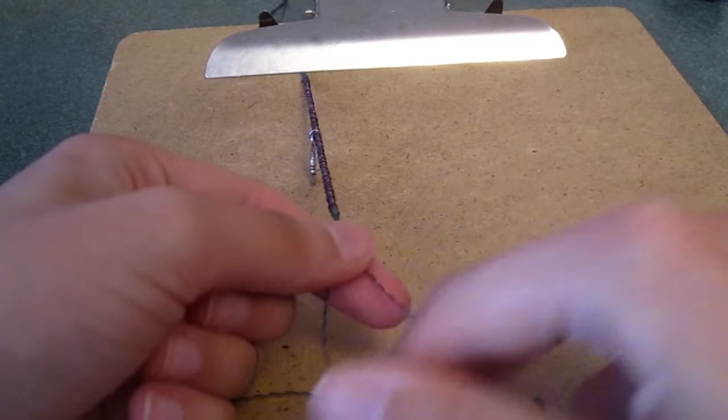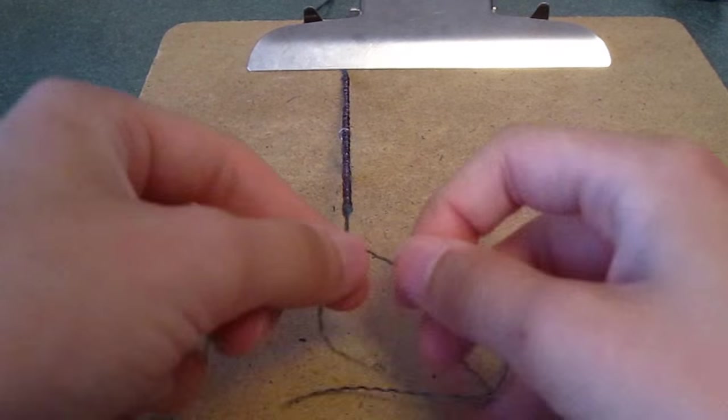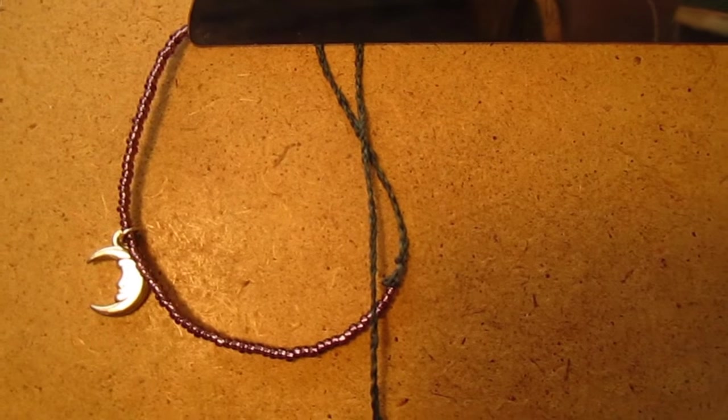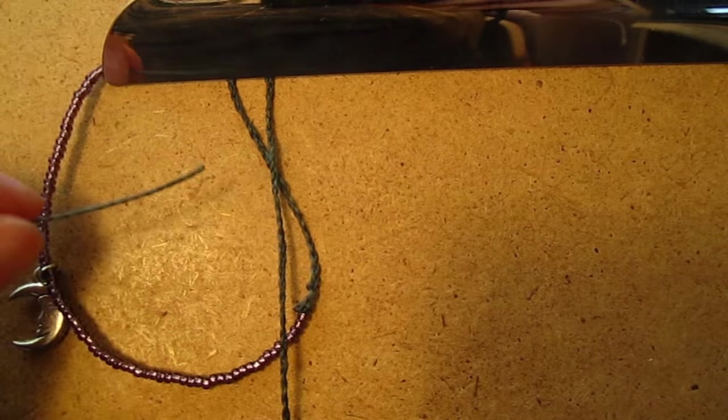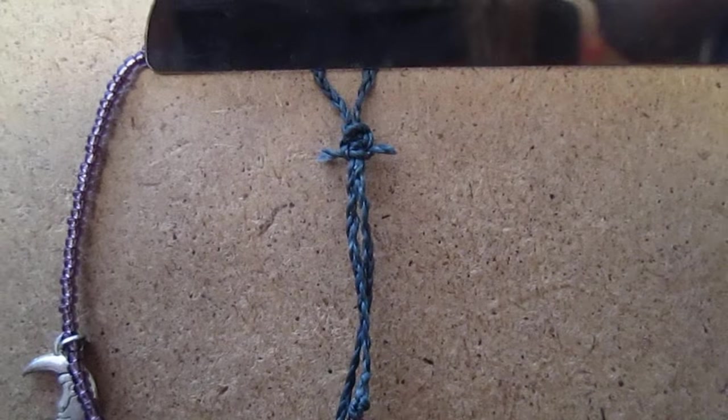Finally, you can braid the ends until you reach about 4 inches again, knotting the 3 strands together and melting down the ends. To make the closure, we do the same as the previous wax cord bracelet tutorials.